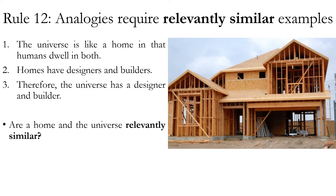Here's another example of an argument by analogy: the universe is like a home in that humans dwell in both. Homes have designers and builders. Therefore, the universe has a designer and builder. This argument is often used in theology or philosophy of religion to show that the universe must have had a creator. Even if successful, it's a separate step to identify that designer with God — it could be an alien intelligence, artificial intelligence, or a group of gods. Let's focus on evaluating whether the analogy holds by asking: are a home and the universe relevantly similar?